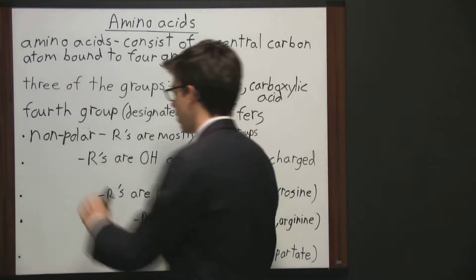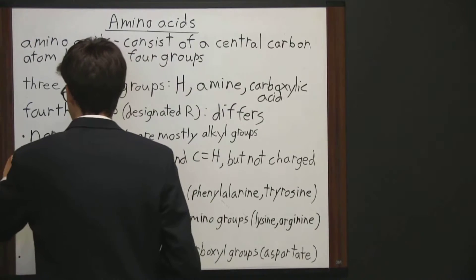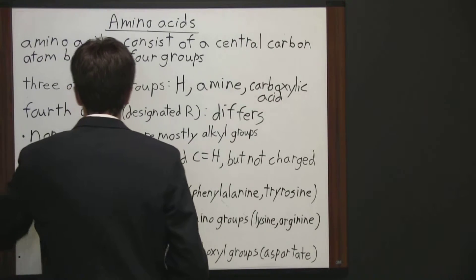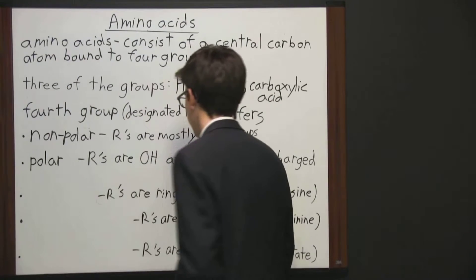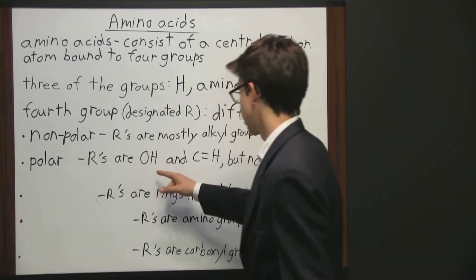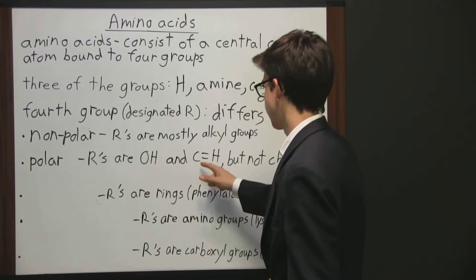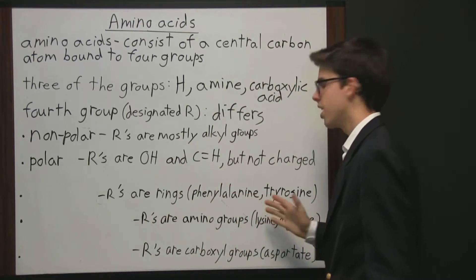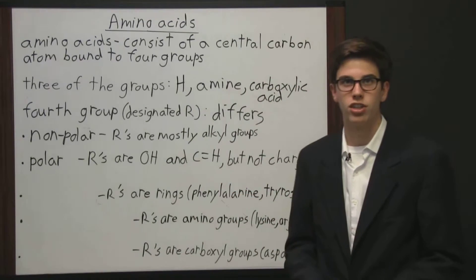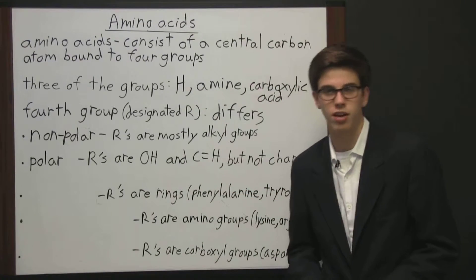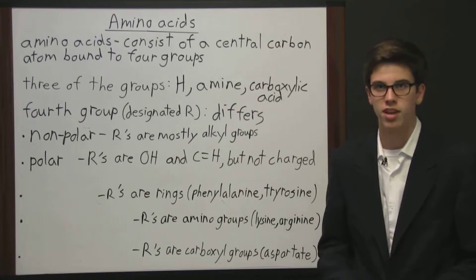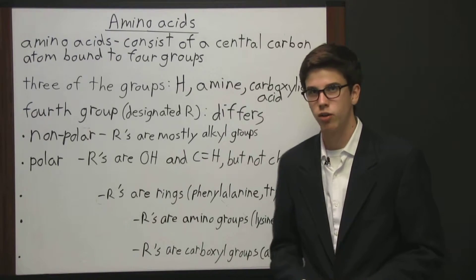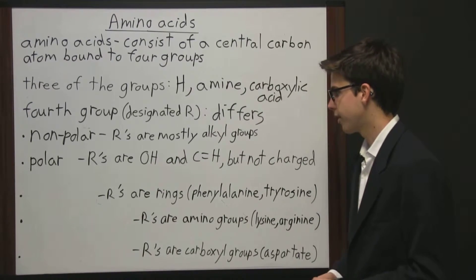The second group is polar, where the R groups contain oxygen and hydrogen with a double bond between carbon and oxygen, but they are not charged. Examples include serine, glutamine, and proline.